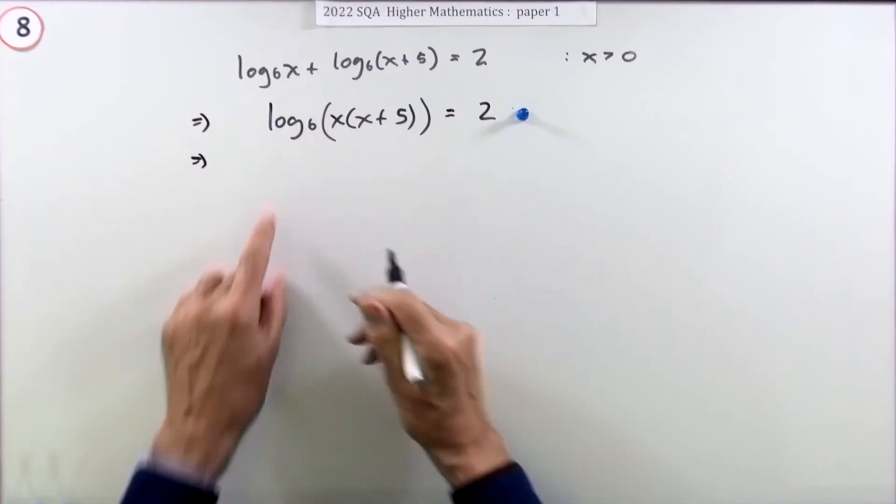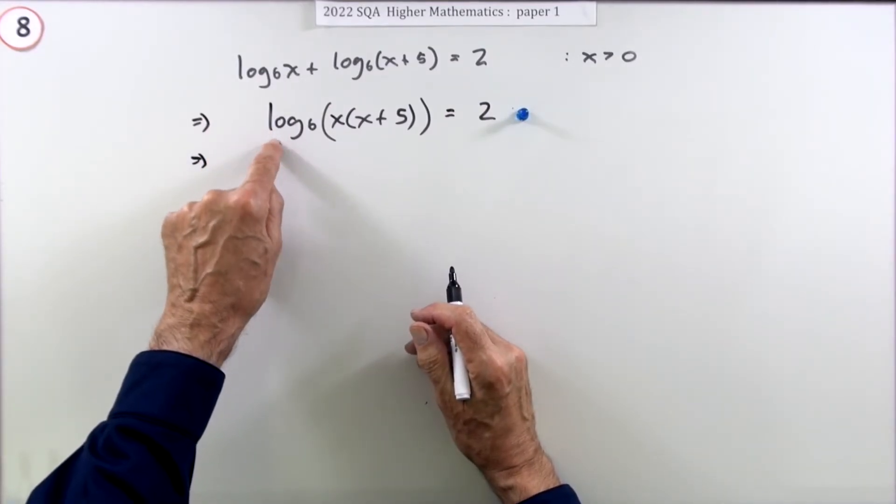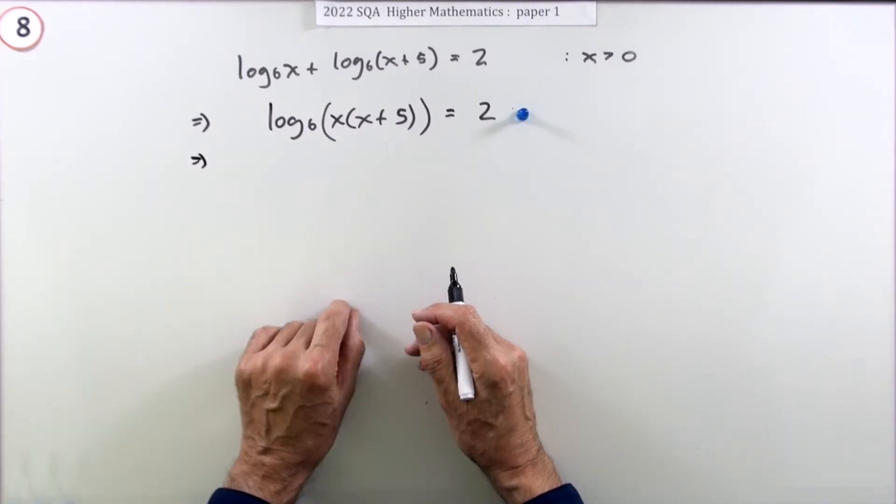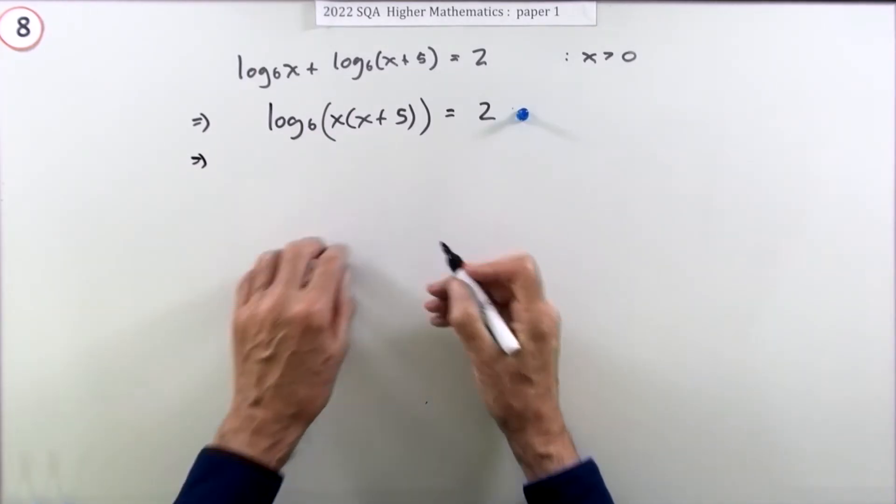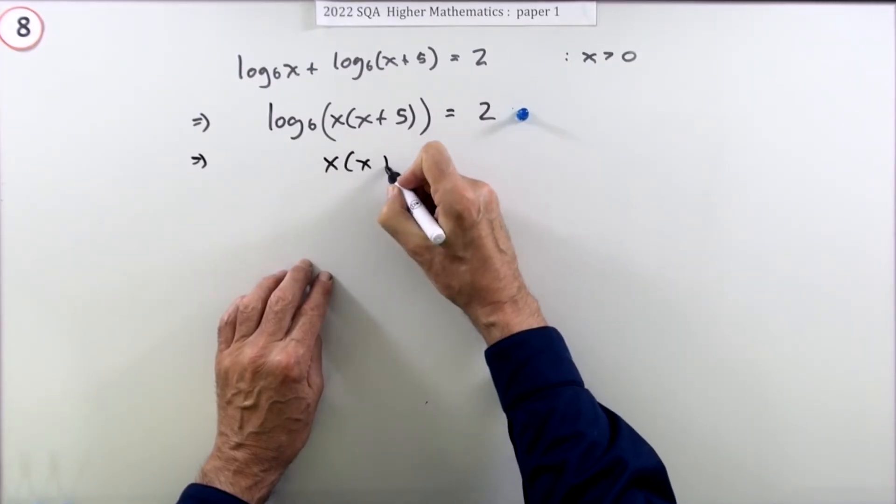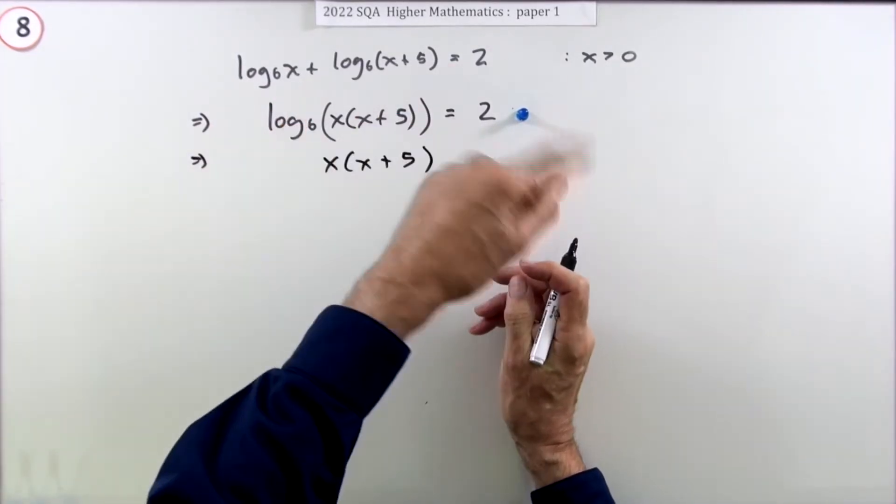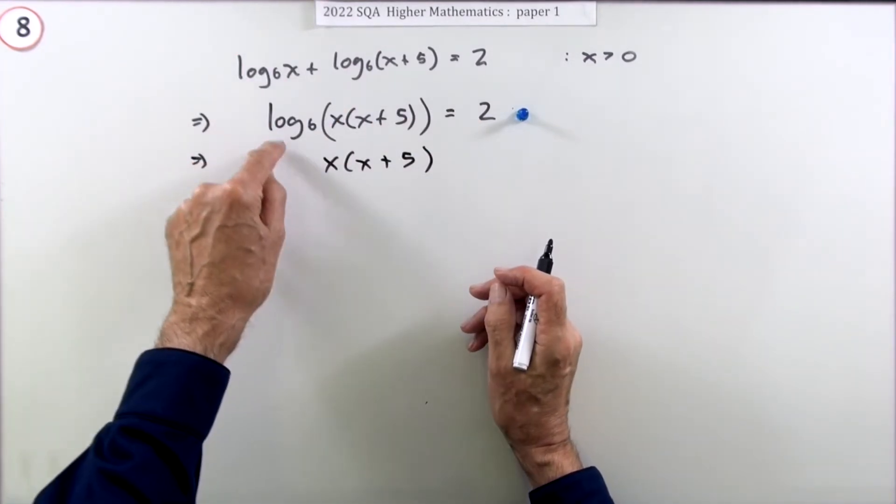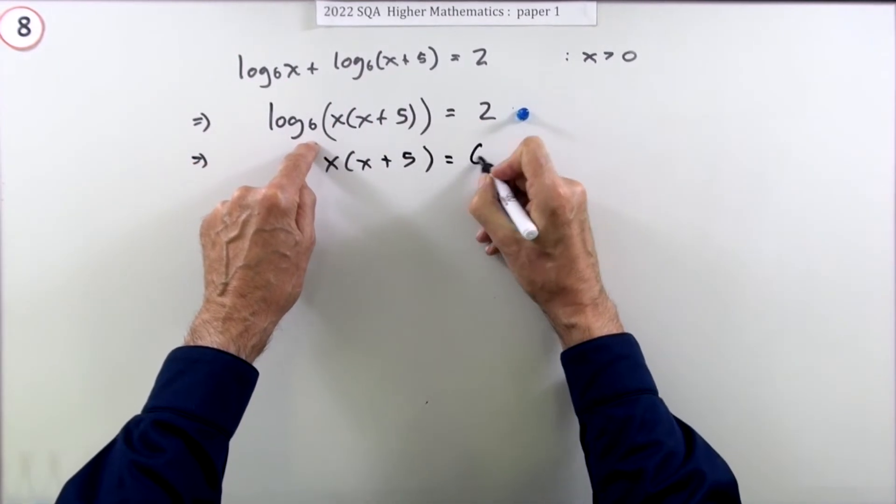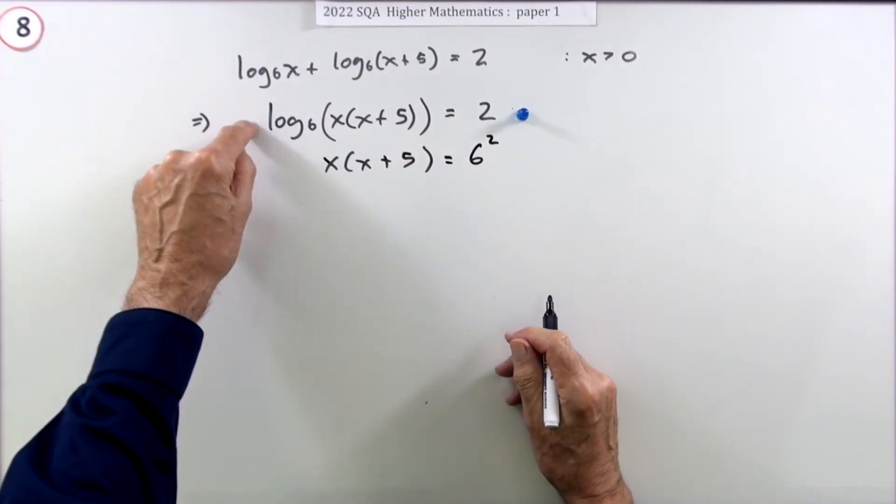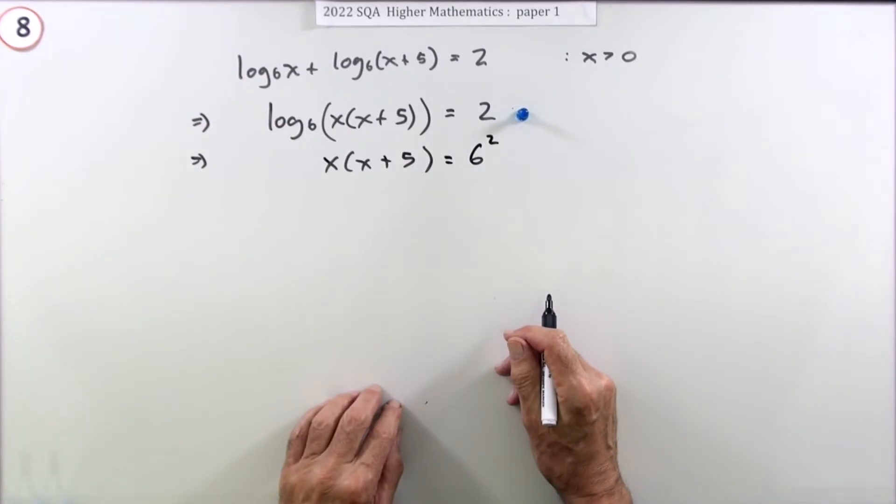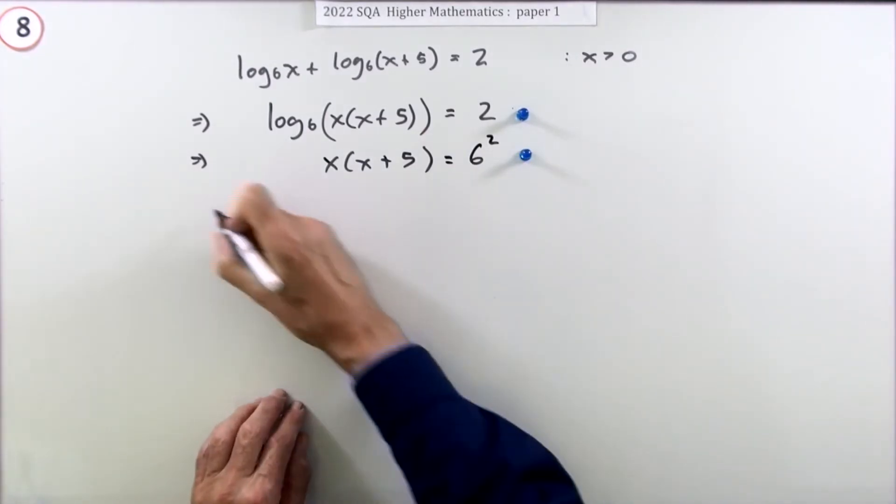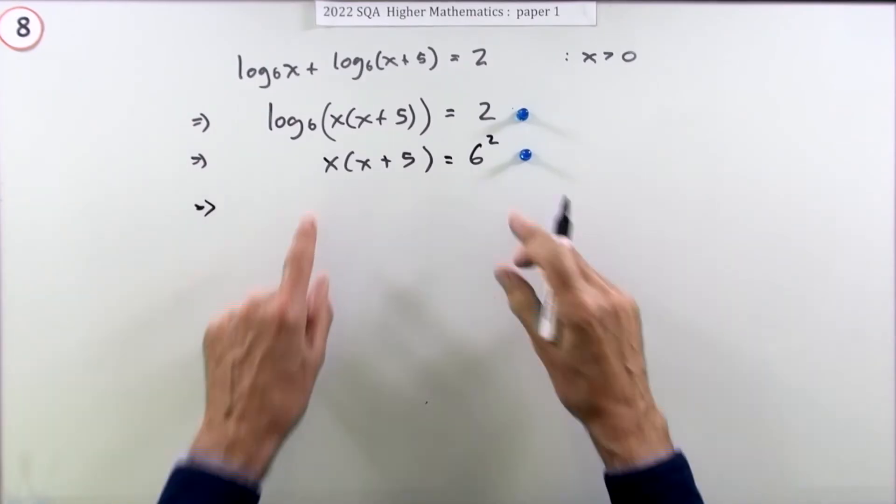Now how are you going to get rid of that? Because you don't want those logs floating about here, you just want an ordinary equation to solve. Well it's quite simple: use the inverse. Just as if I said sine, you'd go inverse sine. If something's multiplying, you go divide. The inverse of the logarithm base 6 is 6 to the power. The inverse of logarithm is the exponential. Now doing that gets a mark.